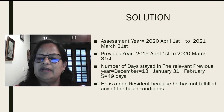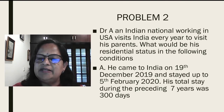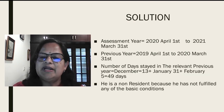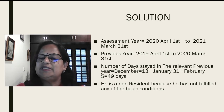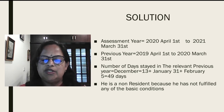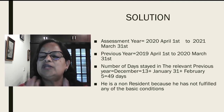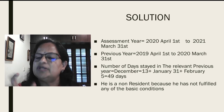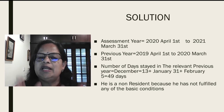He came to India on 19th December 2019, so we count from December 19th to 5th February. For December, counting from the 19th to the 31st gives 13 days (including the 19th). January is a full month: 31 days. February is only 5 days. Total: 13 + 31 + 5 = 49 days.